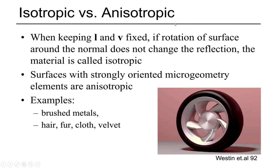We now revisit isotropic and anisotropic materials. A material is isotropic if rotation of the surface around the normal does not change its reflection while L and V are fixed — these materials have equal properties in all directions and their micro geometry is not oriented in any particular direction. Examples include glass and metals. An anisotropic material is one where rotation of the surface around the normal does change the reflection even while L and V are fixed — these have micro geometry oriented in a particular direction. Examples include wood, hair, velvet, cloth, and brushed metals.